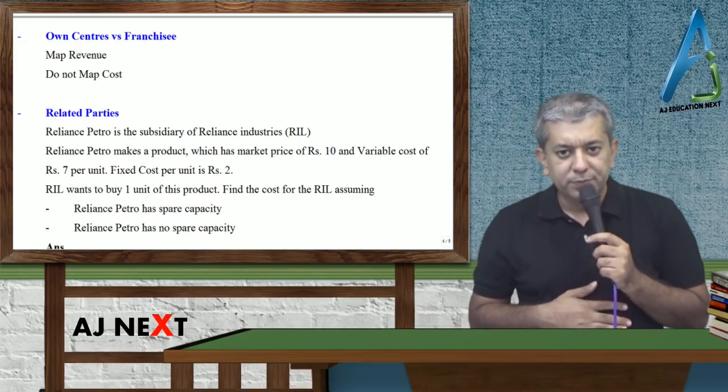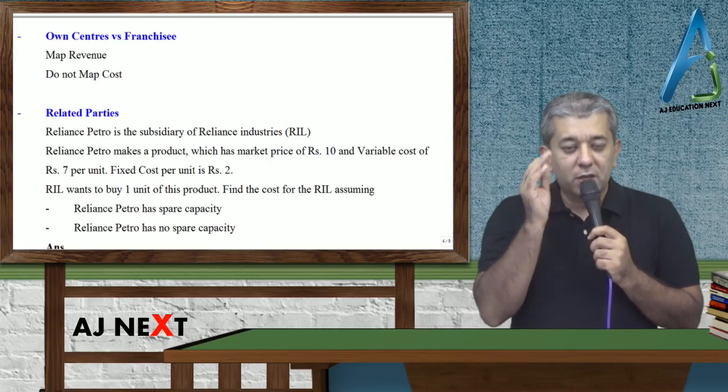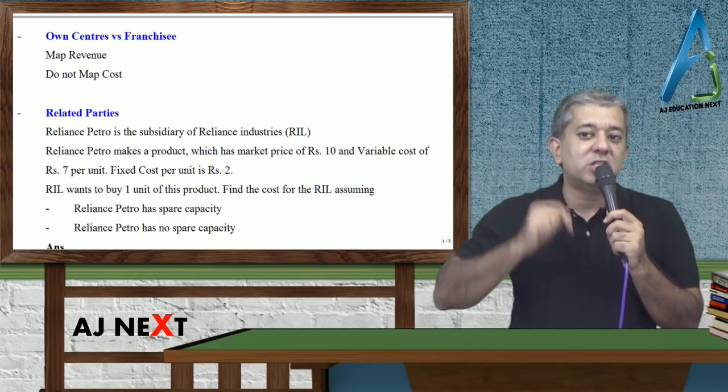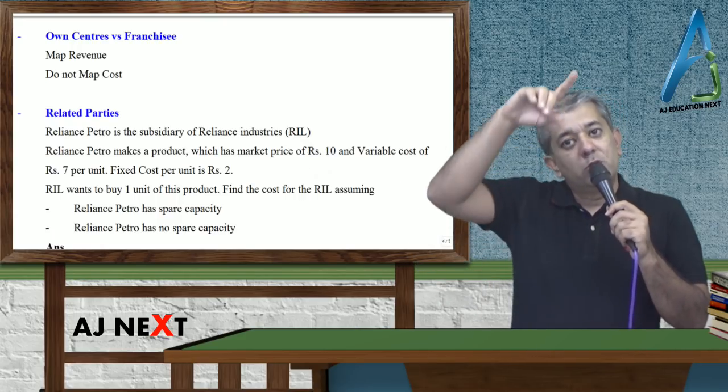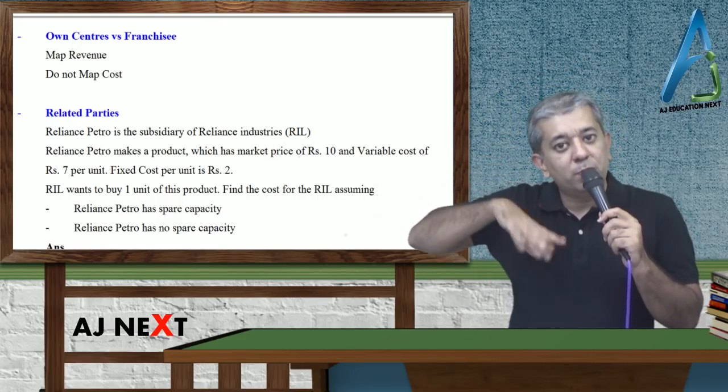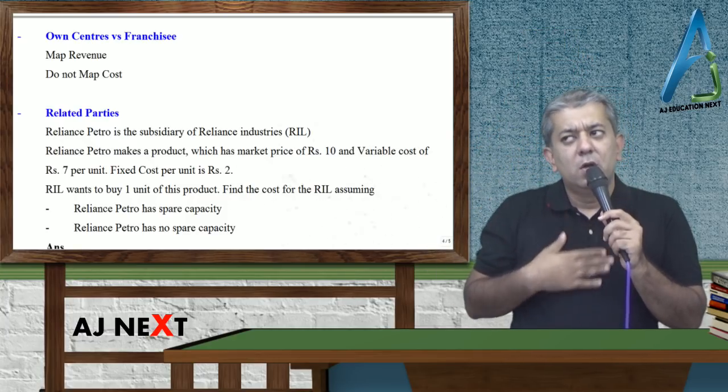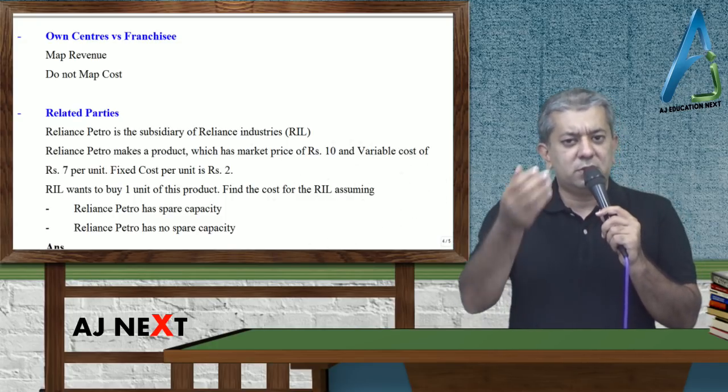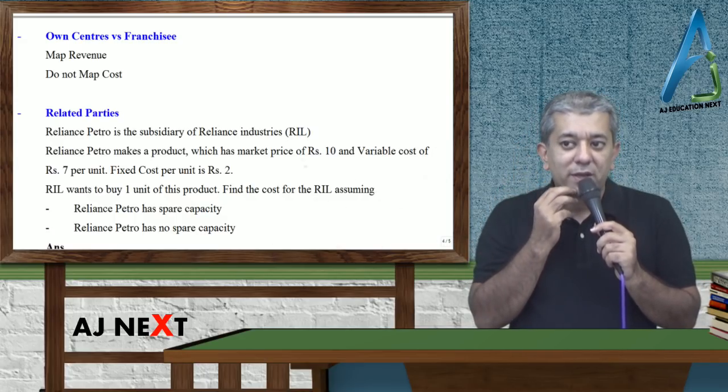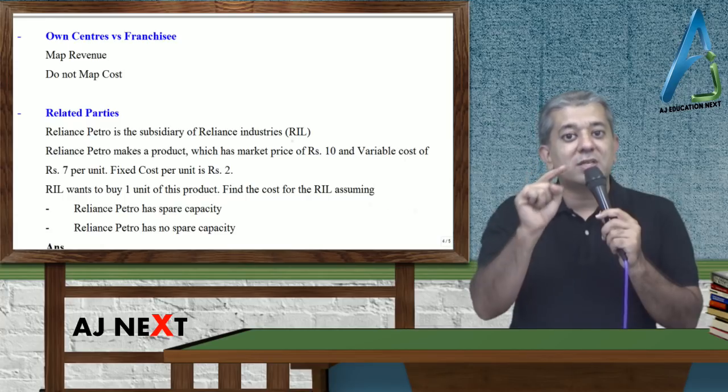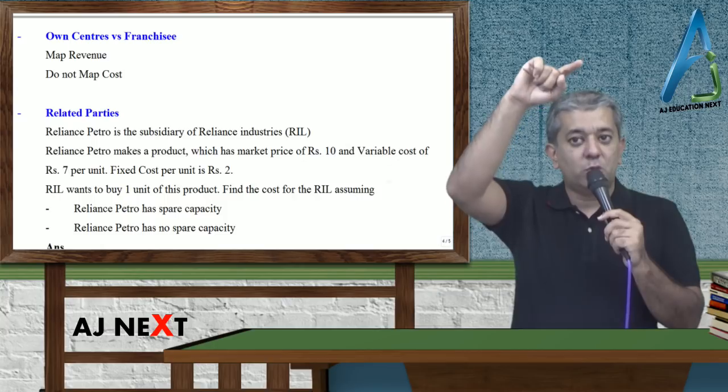Toh, ek normal chiz hamesha souchna. Hum log ne aisa e question kiya tha: ki jis din tumhara franchising ban do jayega na, unka cost alag hore ga, mera cost alag hore ga. Unka joh dukaan hai, joh place of business hai, woh idhar aur hoi ga mera, kidhar aur hoi ga. Unki log alag hore ga, mere log alag hore ga.